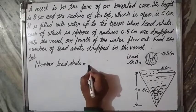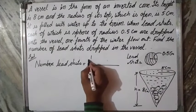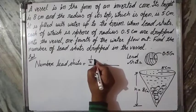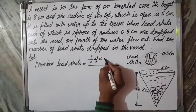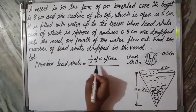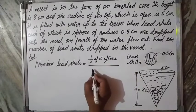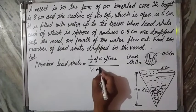n × volume of sphere is equal to one fourth of volume of cone, because one fourth flows out.